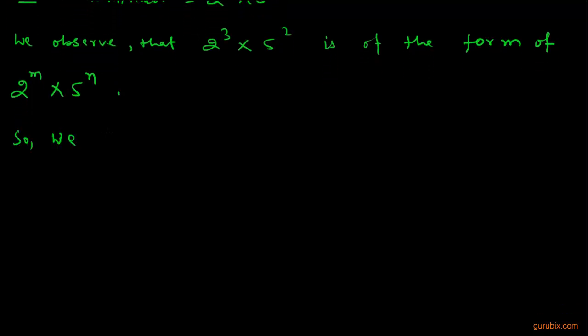So we conclude that 23 over 2 to the power 3 multiplied by 5 to the power 2 has terminating decimal.